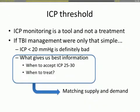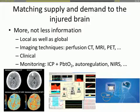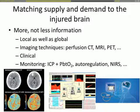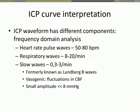So the ICP threshold — if it were that simple, if you could summarize the whole complexity of a brain with one number, it would be easy. That's not the case. You need the best information on supply and demand: ICP among other things, imaging techniques, clinical examination, and other additional monitoring modalities that colleagues will discuss later, to create the best environment for the injured brain to recover.